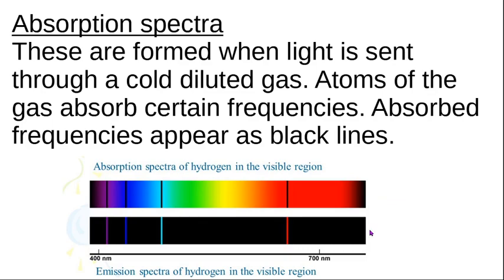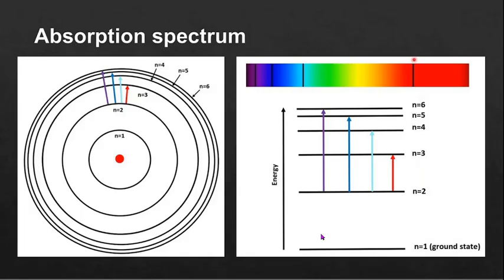The absorption spectrum and the emission spectrum match each other for the frequencies of light that are either emitted or absorbed, because it all depends on the structure of the atom. The absorption spectrum is when you put the full spectrum through a cold gas and some of it is absorbed. Emission is when you make the gas hot, it gets excited, and it emits special colors of light — always corresponding to the structure of the atom and its different energy levels.